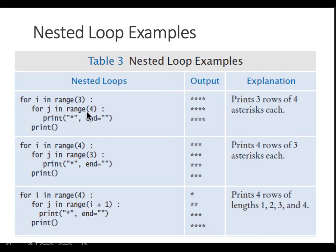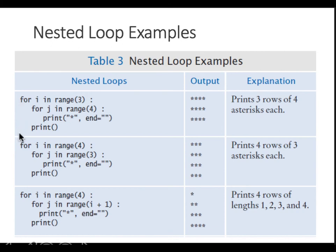Control goes back to the outer loop, i becomes 1, j starts again from zero to three and prints four more stars. Then this print statement moves to a new line. After those four stars, a new line is printed, i becomes 2, j starts from zero to three and prints four more stars. Then the inner loop finishes, the outer loop finishes, and control comes out.